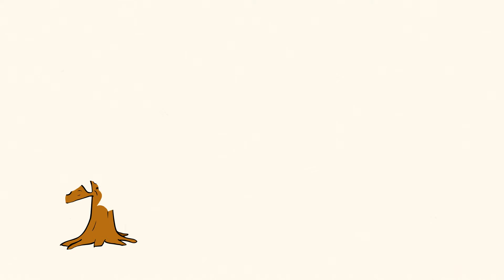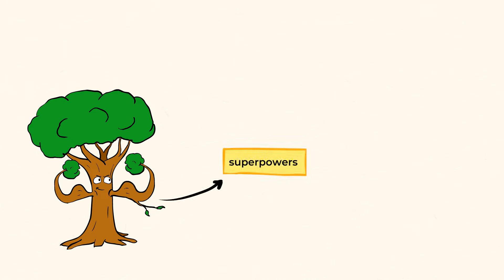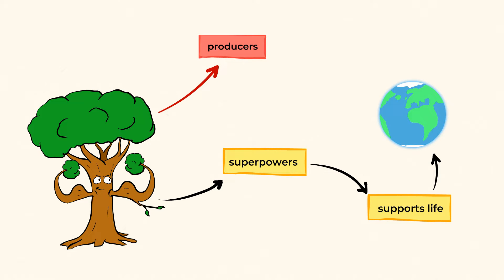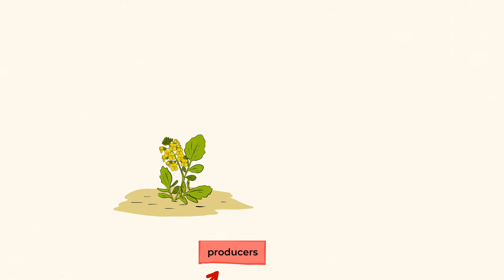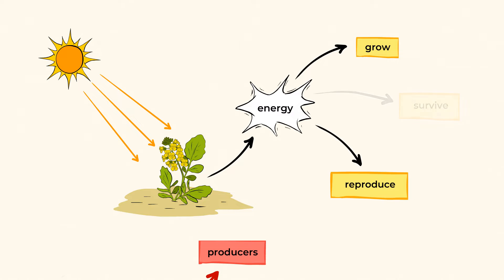Apart from their beauty, plants have a set of superpowers which support life on Earth. Plants' special superpower is that they are producers. This means they create energy from the sunlight in order to grow, reproduce, and survive without eating other living things. Plants are unique for being the only living things on planet Earth to do this.